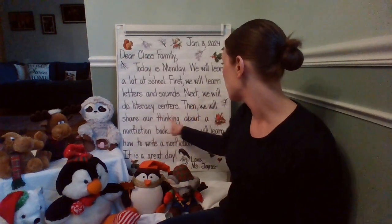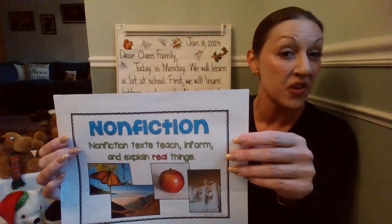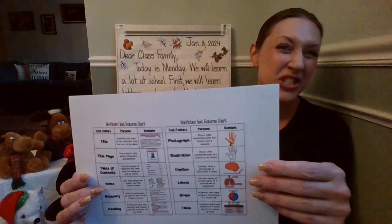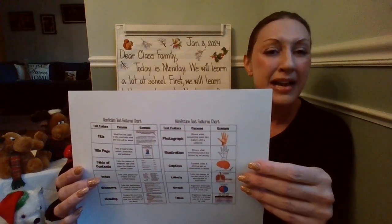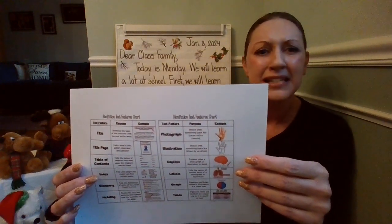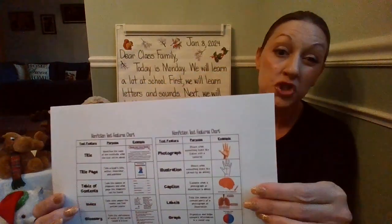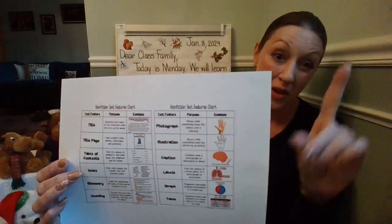Then we will share our thinking about a nonfiction book. We'll look at a nonfiction text — remember, they teach, inform, and explain real things. We're going to use text features that help us: the title, photographs, headings, subheadings, captions, index, glossary, and all kinds of things to help us. That's what good readers do. We're going to read a nonfiction text, share our thinking, and practice being great communicators and collaborators.